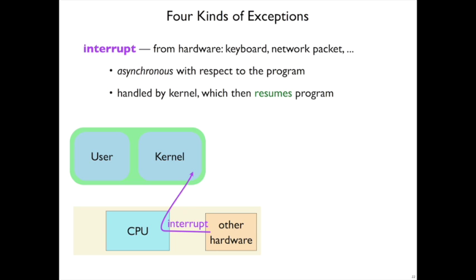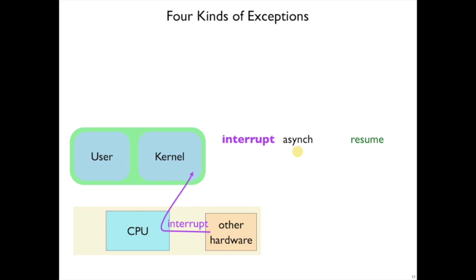One thing that might happen is that an interrupt is generated by the other hardware - things like keyboard input, a network packet, and so on. These kinds of exceptions are asynchronous with respect to the program; nothing in the program said there's a network packet now. Instead the network packet came from the outside. Interrupts are generally handled completely by the kernel, which will then resume the program. So let's put 'interrupt' in a table of the four kinds of exceptions: it's asynchronous and the usual action is to resume.